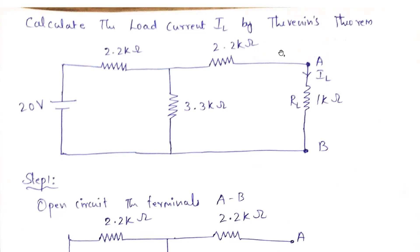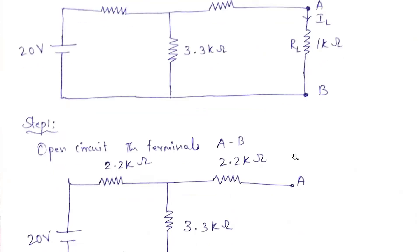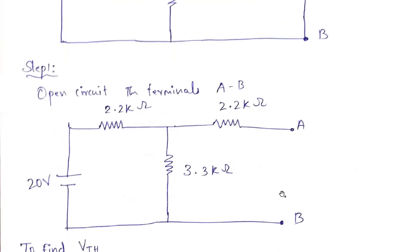Using Thevenin's theorem — note that simply finding the equivalent resistance and load resistance by inspection would be wrong, because the question clearly specifies to use Thevenin's theorem. All resistances here are in kilo ohms. Step number one is to open the terminals — that is, the load resistance terminals A and B need to be open-circuited. That is step number one.